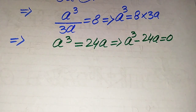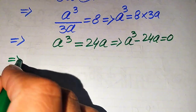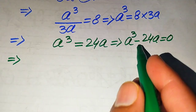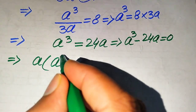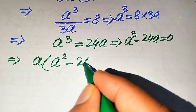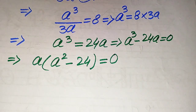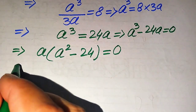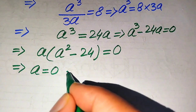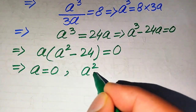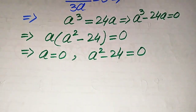Moving 24a to the left-hand side gives a cubed minus 24a equals 0. Both terms involve a, so we take a as the common factor. Factoring out a, we get a times (a squared minus 24) equals 0. This splits into two cases: a equals 0, and a squared minus 24 equals 0.